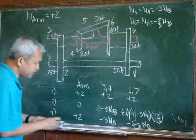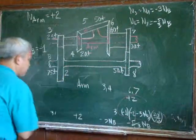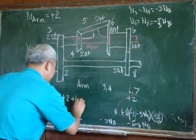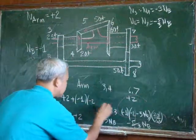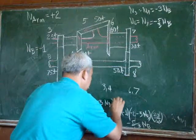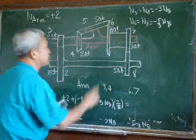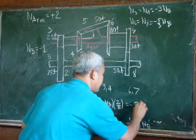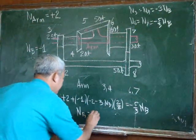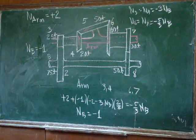Considering this, we write: plus two, plus negative one times negative two minus three NB, multiplied by two over six, must be equal to negative five over three times NB, as we found earlier. Solving this equation, NB must be equal to negative one. So that is one approach to solving this problem.